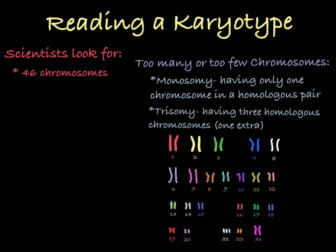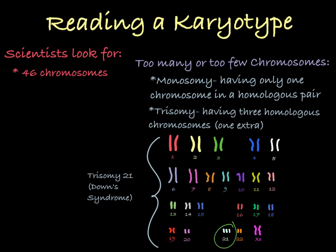Trisomy is a condition in which you have three homologous chromosomes instead of two. This is a karyotype of a person suffering from Trisomy 21, which you may know as Down's Syndrome. You can see this person has three copies of chromosome 21. This extra copy will cause delays in both mental and physical development, and it will cause a shortened lifespan.